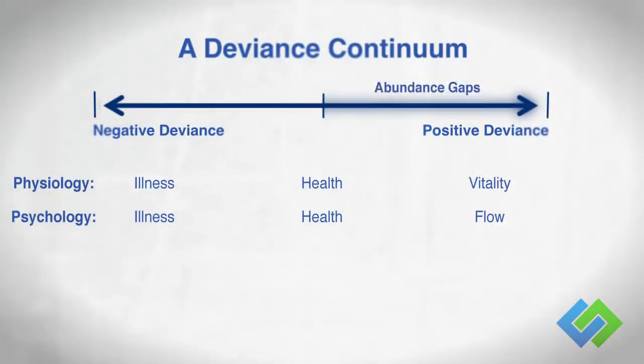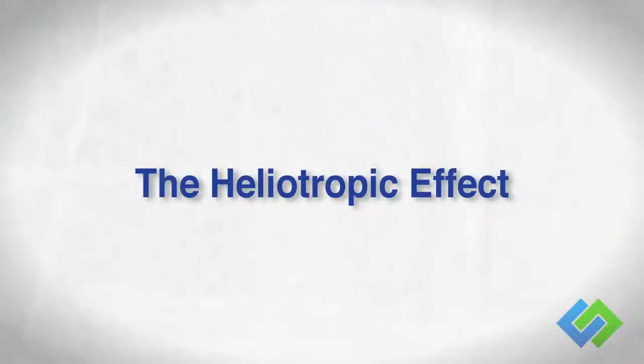Positive leadership focuses on the right-hand side — the right-hand gap. I refer to those as abundance gaps, as opposed to problem or deficit gaps. What's interesting about focusing on the right-hand side of the continuum is, when you focus on abundance gaps, something happens called the heliotropic effect.